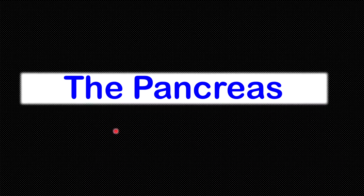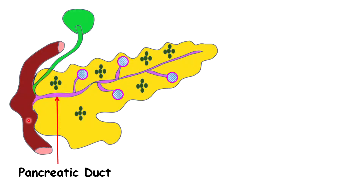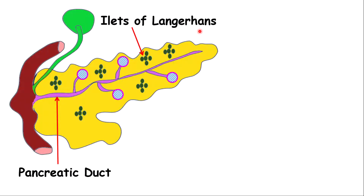The pancreas is also important and is an accessory gland to the digestive system. The pancreas has two main functions in the body: it serves as an endocrine organ and also as an accessory to the digestive system. We have the pancreatic duct that releases substances into the small intestine, and we have the islets of Langerhans, which are part of the endocrine system and produce the hormones insulin and glucagon, important in controlling blood sugar levels.